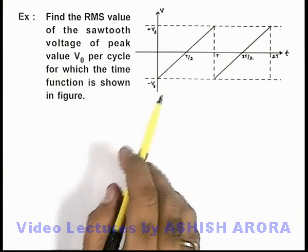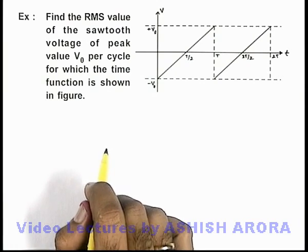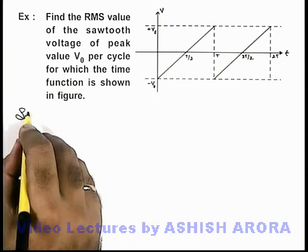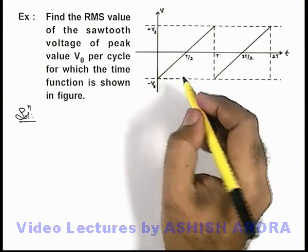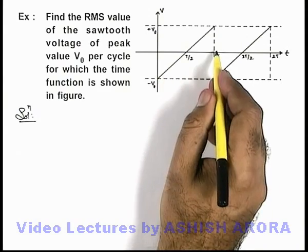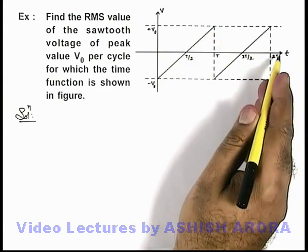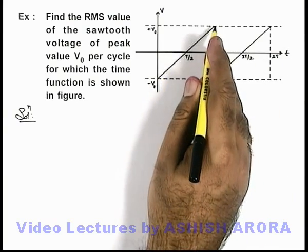We need to find the RMS value of this voltage. From the graph, we can directly write that from zero to T in one period, the voltage is varying linearly with time from -V₀ to +V₀.